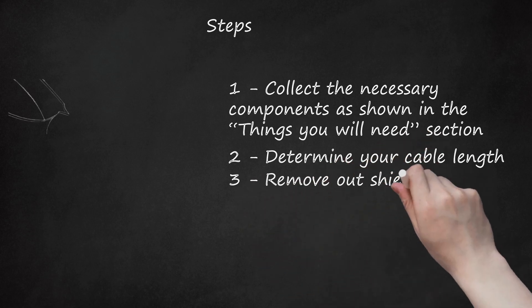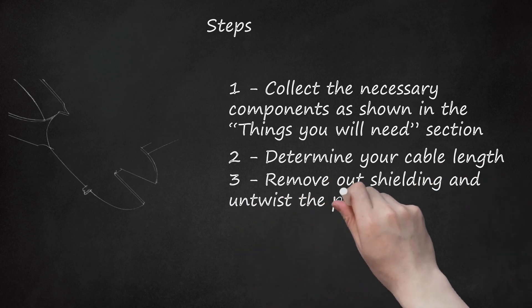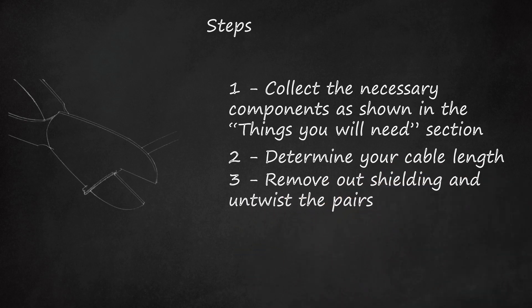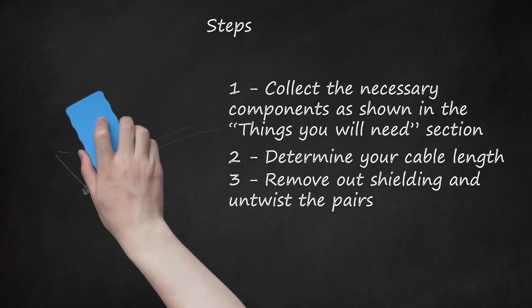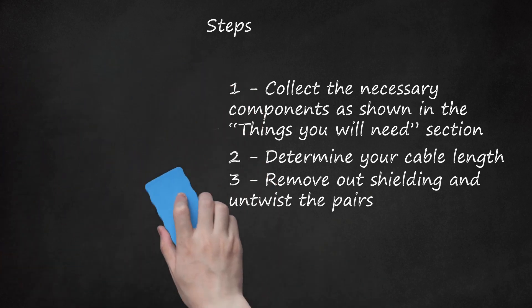Step 3: Remove outer shielding and untwist the pairs. Remove carefully 1 or 2 inches of outer shielding of cable at each end with a wire stripping tool. Then untwist the wires from each other so you can work with them. Don't untwist them beyond what you have exposed. The more untwisted wire you have, the worse the problems you can run into.